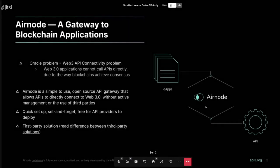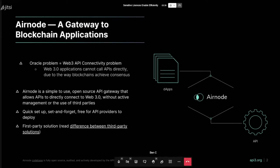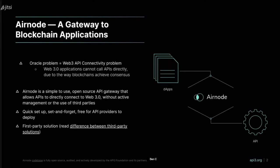Starting with an overview of what Airnode is, how we bring this feed onto the blockchain, and a bit about ANU and QRNG. API3 believes there is an API connectivity problem in Web3 — due to the way blockchains hash and find consensus, it's near impossible to add an API request into a smart contract without causing major problems. That's why oracles exist.